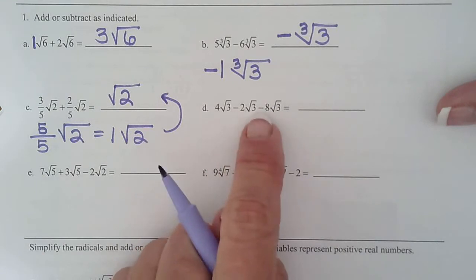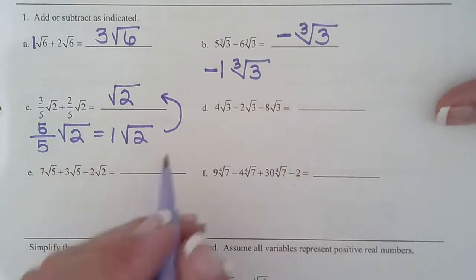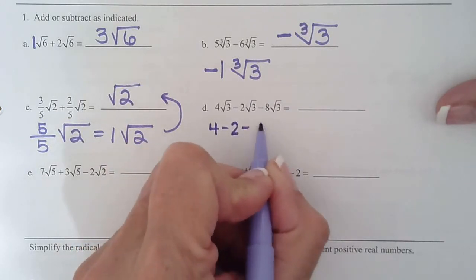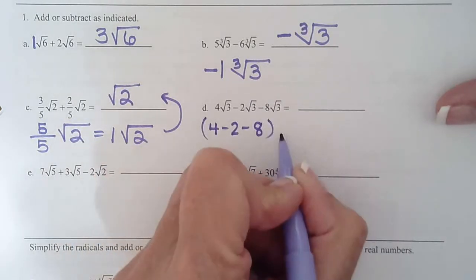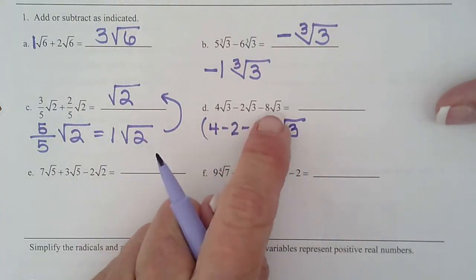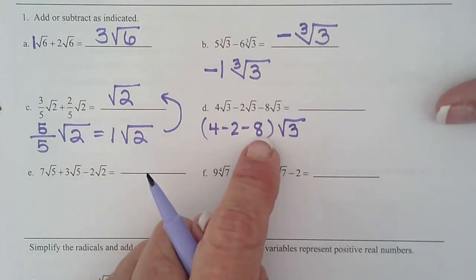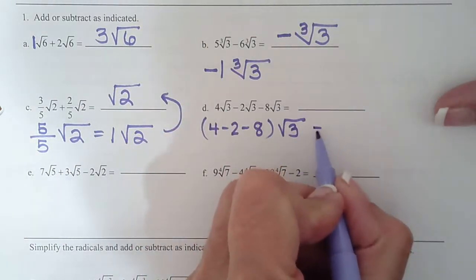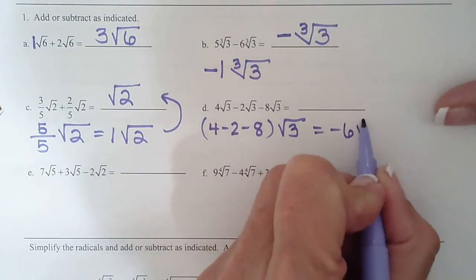Okay. So does everybody agree? Three like terms here. Square root 3, square root 3, square root 3. So we're really just doing 4 minus 2 minus 8 and then adding a square root 3 onto it. So we add or subtract all the coefficients. So 4 minus 2 is 2, minus 8 would be negative 6, radical 3.